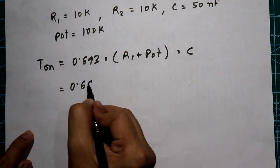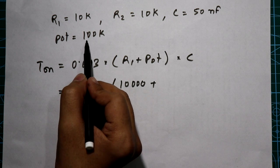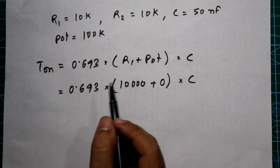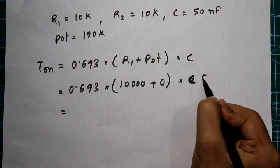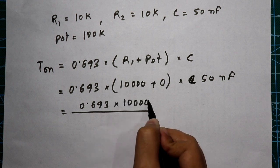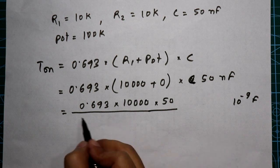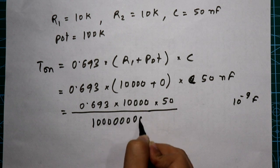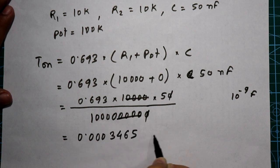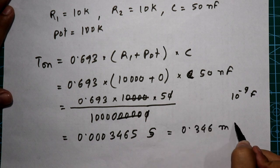Multiplied by C. R1 equals 10 kilo-ohms. Since the potentiometer is 100 kilo-ohms, we will take two values: minimum value of 0 ohms and maximum of 100 kilo-ohms, and calculate the T-on time. The capacitance is 50 nanofarads. So: 0.693 × 10,000 ohms × 50×10⁻⁹ farads = 0.0003465 seconds, which equals 0.346 milliseconds.